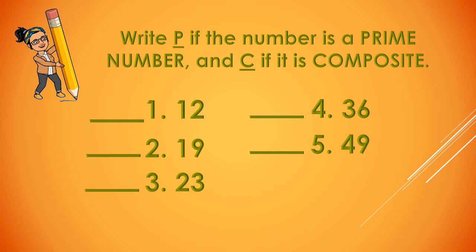Now it's time to practice some honesty — check your own work. Number 1, answer is C. Number 2 is a P. Number 3, 23, is P. Number 4 is C. And number 5, 49, is C.